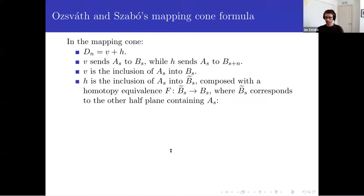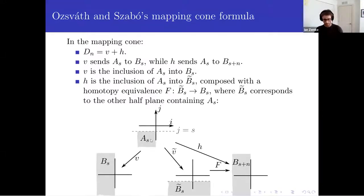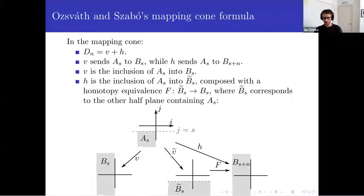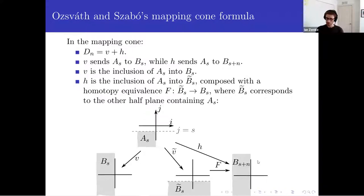V is the inclusion. H is a bit more complicated to describe; it's a composition of two things. H is the inclusion of A sub S into the other half plane which contains A sub S — A sub S is a quadrant, so it's contained in two half planes. B sub S is one of the half planes; I'm going to call B tilde sub S the other half plane that contains it. So H is a composition of the inclusion map into B sub S tilde, followed by some homotopy equivalence between B tilde S and B sub S plus N, which exists for abstract reasons — both half planes are homotopy equivalent, so H is a composition of these two maps.